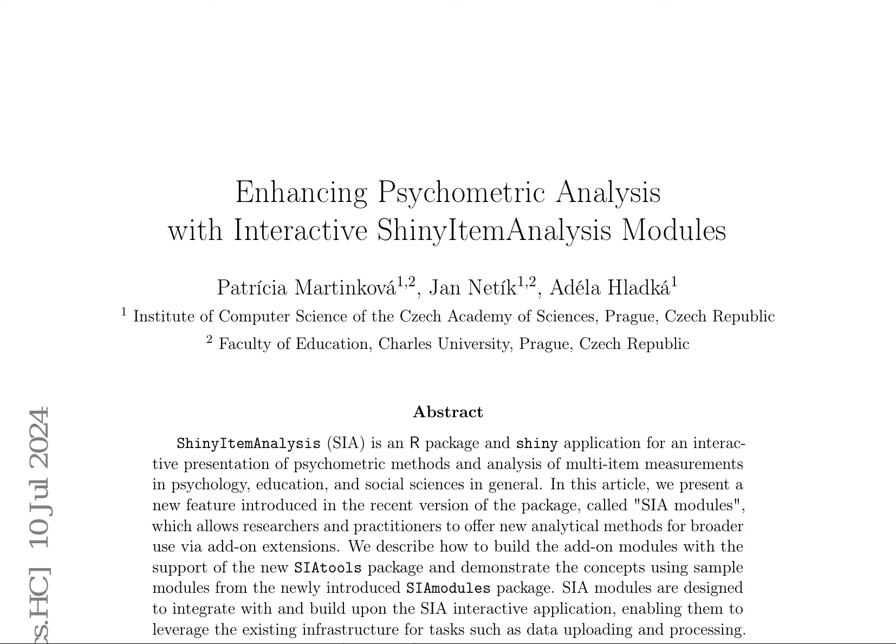Shiny Item Analysis (SIA) is an R package and Shiny application for interactive presentation and analysis of psychometric methods in psychology, education, and social sciences. The recent version of the package introduces SIA modules, allowing researchers and practitioners to develop add-on extensions for broader use. These modules integrate with and build upon the SIA interactive application, leveraging existing infrastructure for tasks such as data uploading and processing.